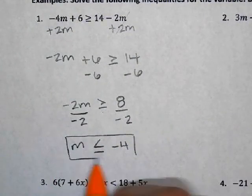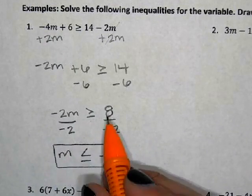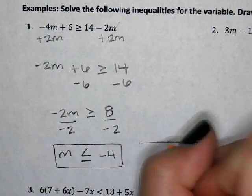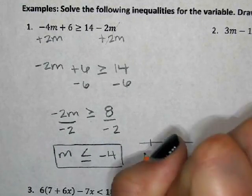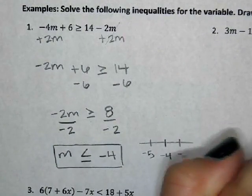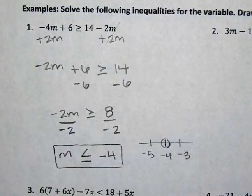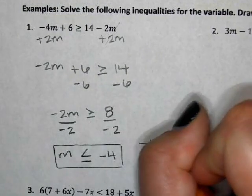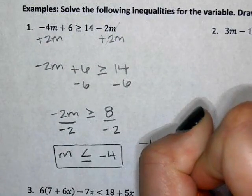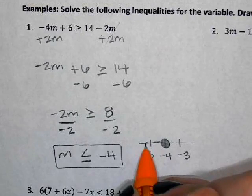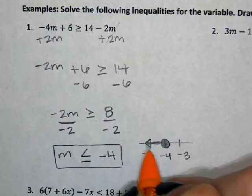The instructions tell us to solve the inequality, which we did, but they also tell us to draw a number line. So I have negative 4 on the number line. Should that circle be filled in or not? Filled in. And then which way should the arrow go? To the left.